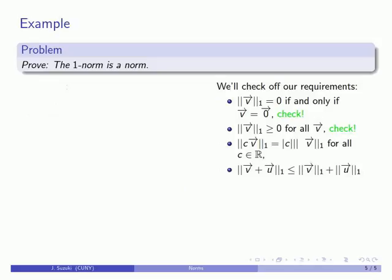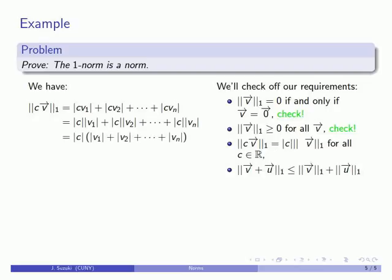Next, we check how the norm acts under scalar multiplication. The 1-norm of a scalar multiple of our vector, by definition, is the sum of the absolute values of the scalar multiples of the vector components. Because c and the vector components are real numbers, the absolute value can be split, and we can factor out the absolute value of c. The remaining sum is just the 1-norm of the vector itself. So the norm of the scalar multiple equals the absolute value of the scalar times the norm of the vector — our third requirement is met.